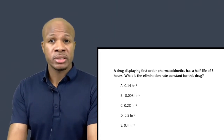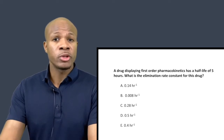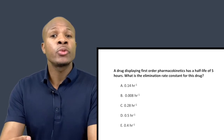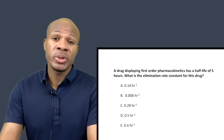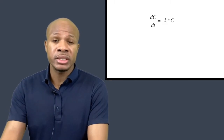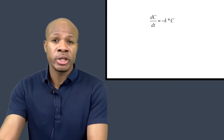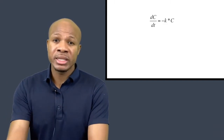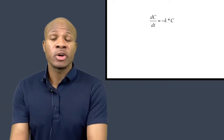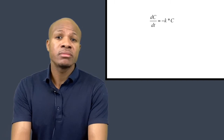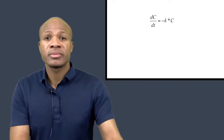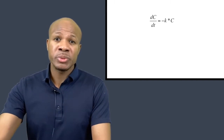For first order kinetics, the rate of change is directly proportional to the drug concentration. The rate of change of the drug concentration — that would be the derivative, dc/dt — is directly proportional to the drug concentration. So that would be equal to minus k, which is a constant, times the drug concentration. It's minus because the drug is being eliminated.